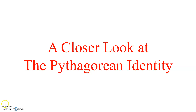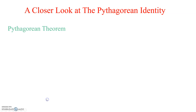In this video lesson, we'll take a closer look at the Pythagorean Identity. Early on, when we looked at the Pythagorean Theorem, we all learned A squared plus B squared equals C squared.